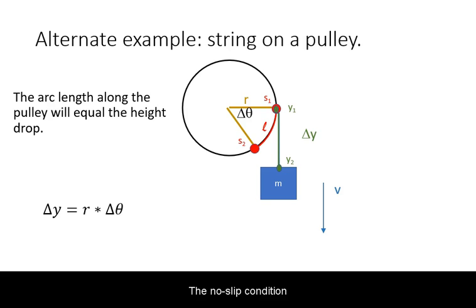The no-slip condition can be applied no matter which object is moving. It can be a round object rolling on a stationary surface as before, or it can be a stationary pulley with a string around it, and it's the length of string that moves relative to the pulley.